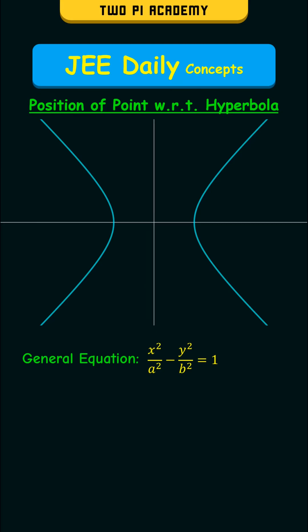Position of a point with respect to a hyperbola. Consider a point P, then this point can be in three regions relative to the hyperbola.